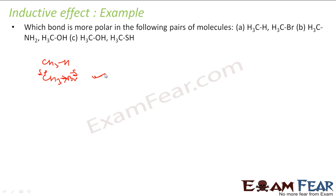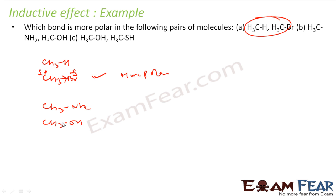So in this case, the C-Br bond is more polar. Now let's take CH3NH2 and CH3O. Oxygen is more electronegative than carbon. Nitrogen has an electronegativity of 3.04, oxygen is 3.44, and carbon is 2.55.